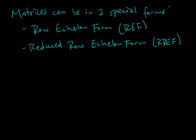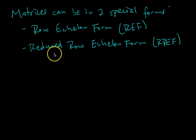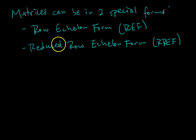Matrices can be in two special forms. We have row echelon form, abbreviated REF, and then reduced row echelon form, abbreviated RREF. In this video we're going to go through the different criteria of each form so that we can look at a matrix and identify if it's in row echelon form, reduced row echelon form, or neither.